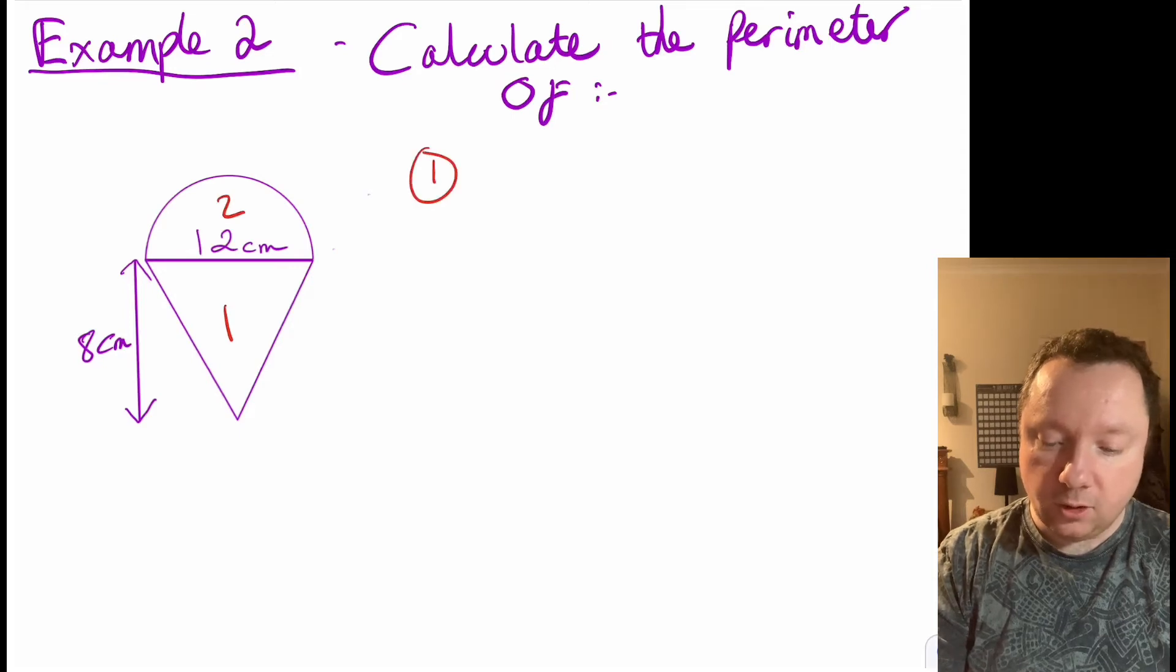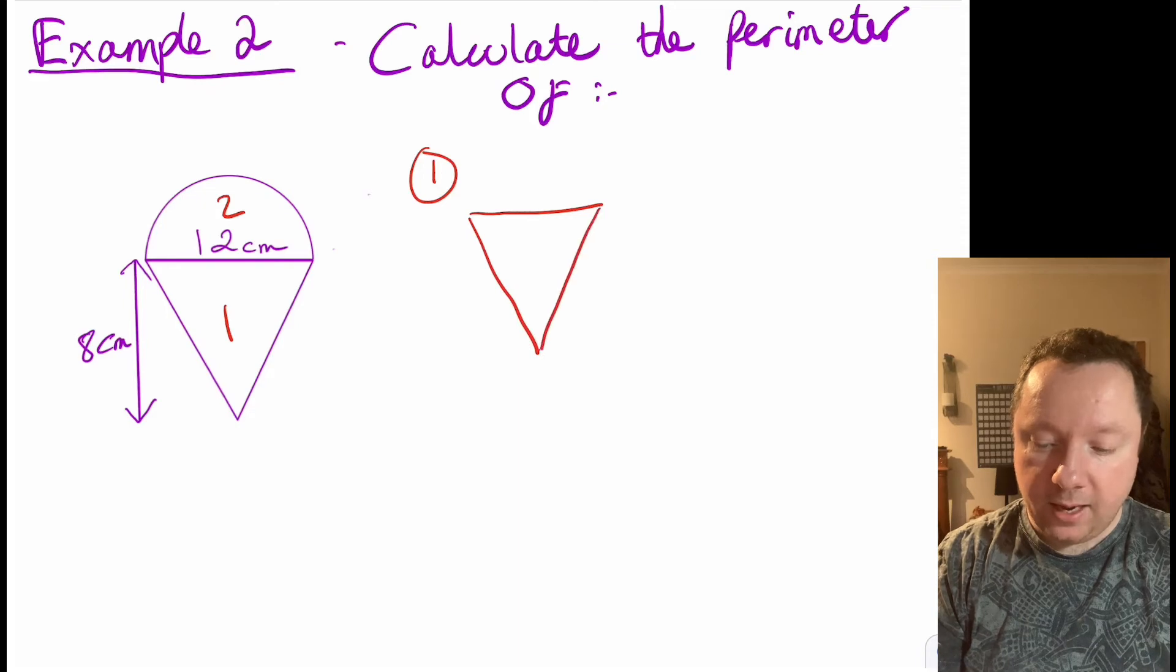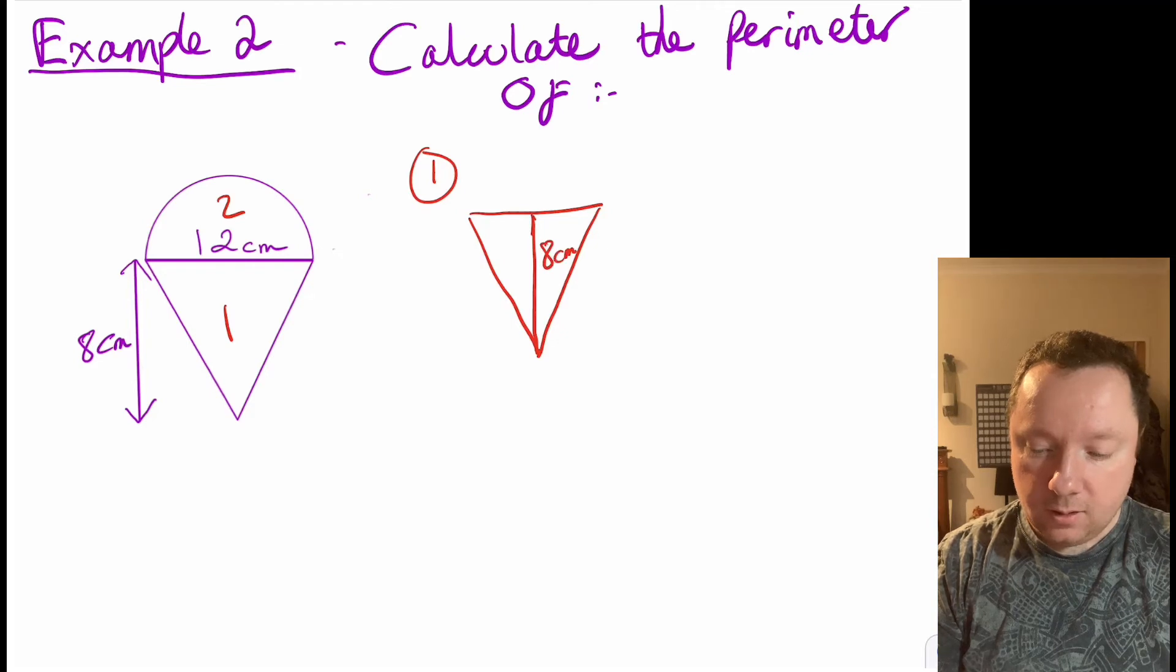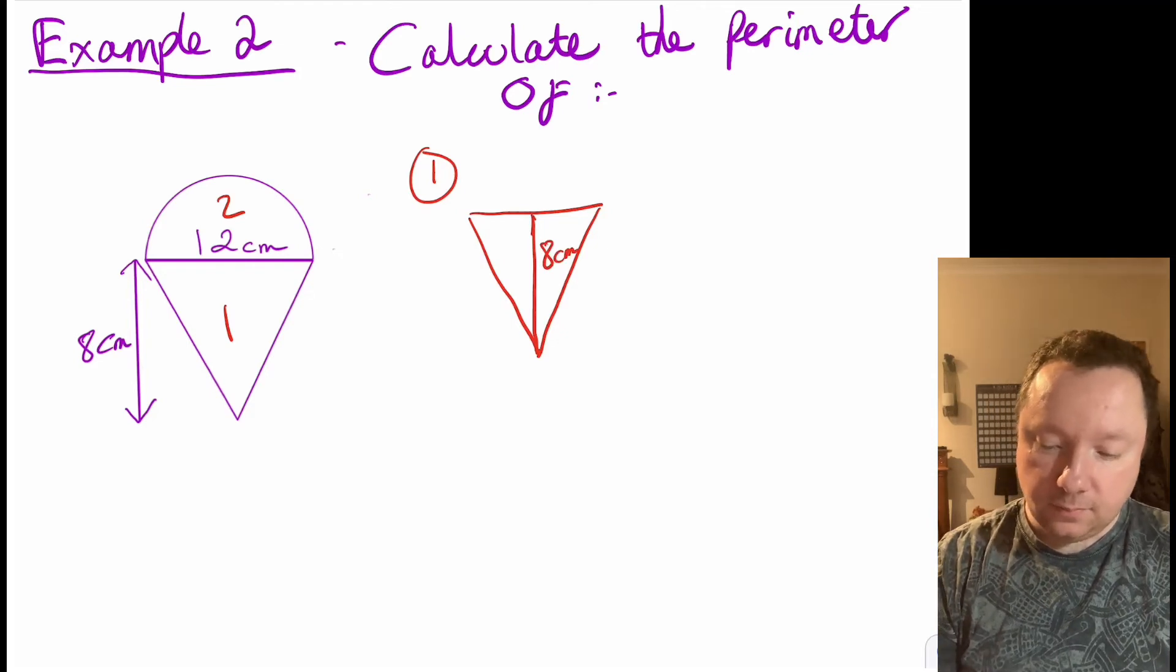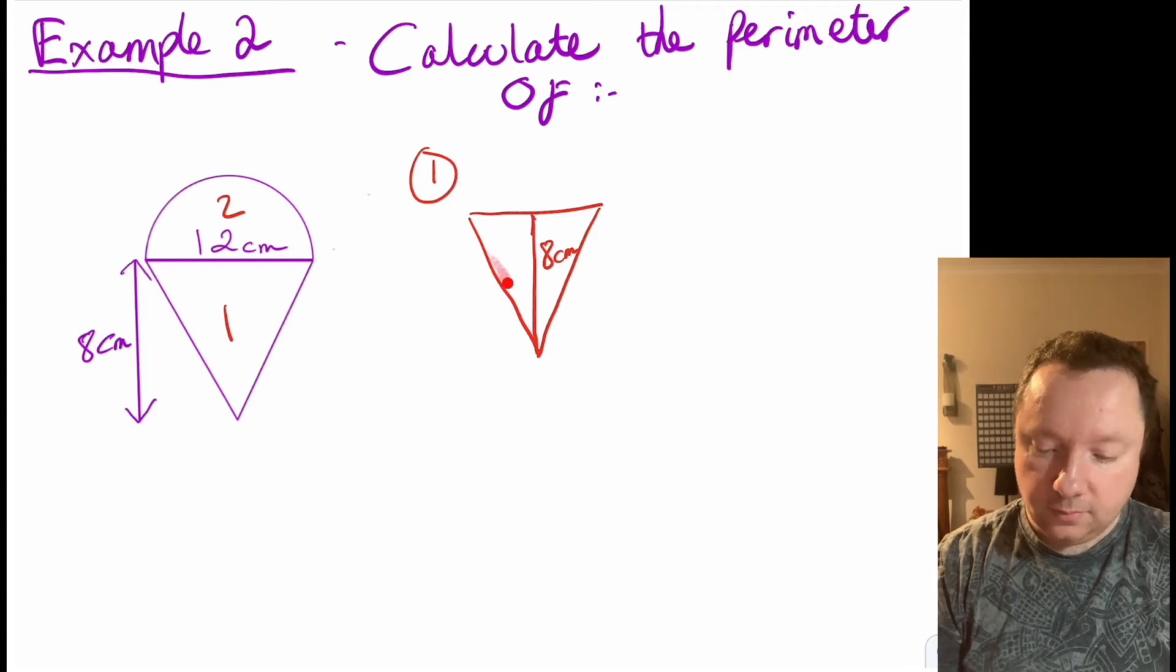If I draw a little sketch, it doesn't have to be exact, but if I put that 8 centimetres inside, now then that's the height of my triangle. The problem is I don't know this side here and I'm going to need it to work out the perimeter.